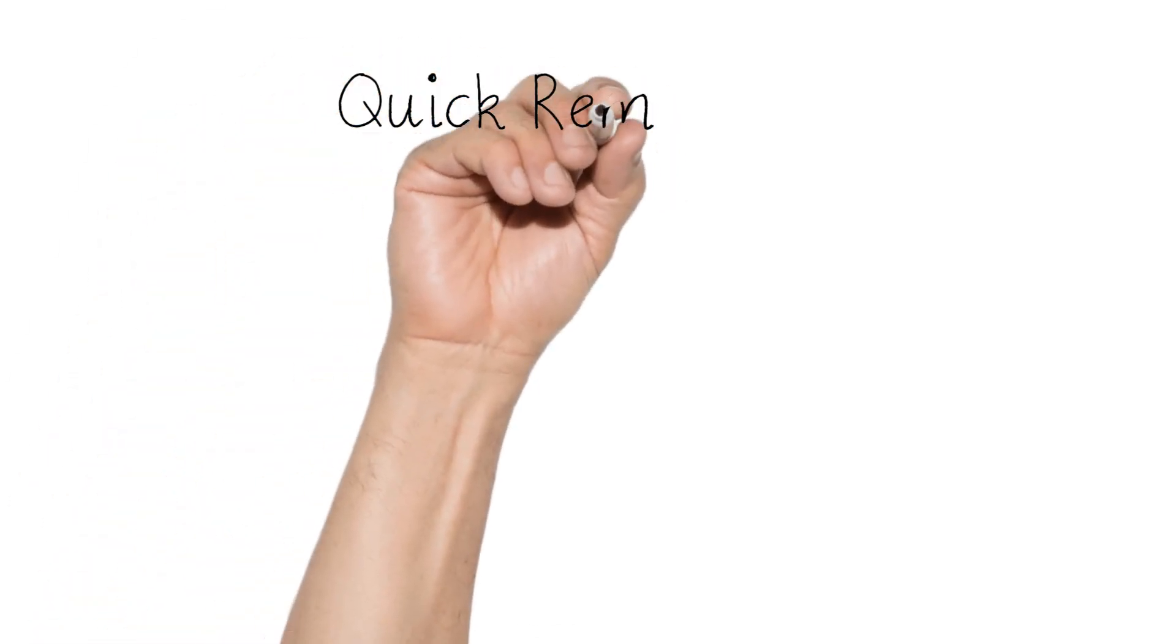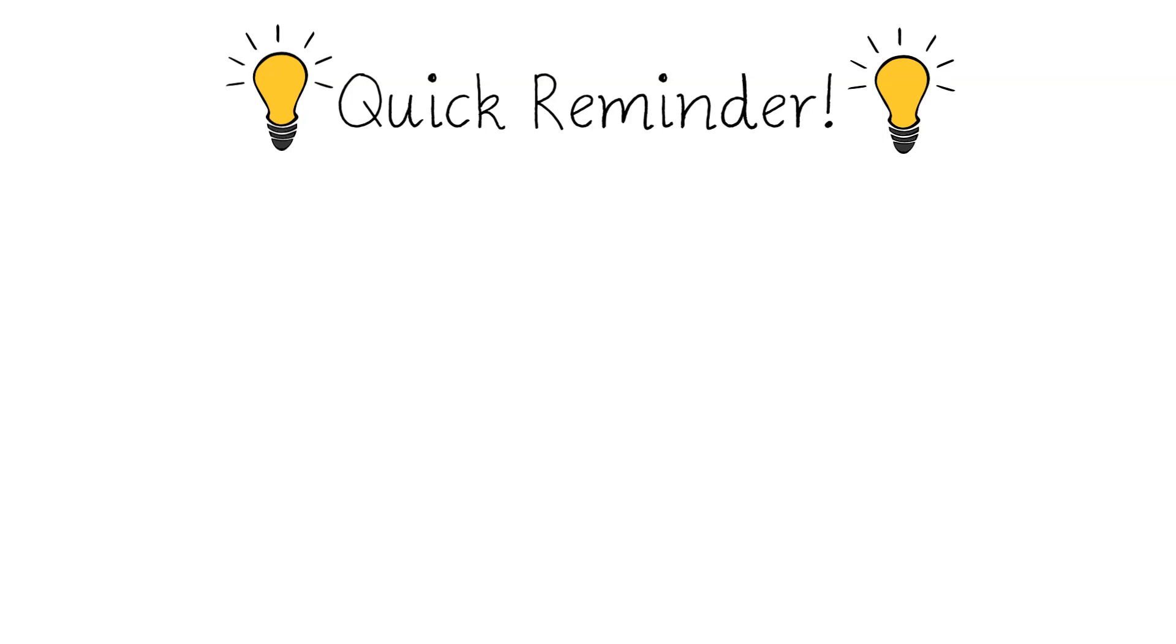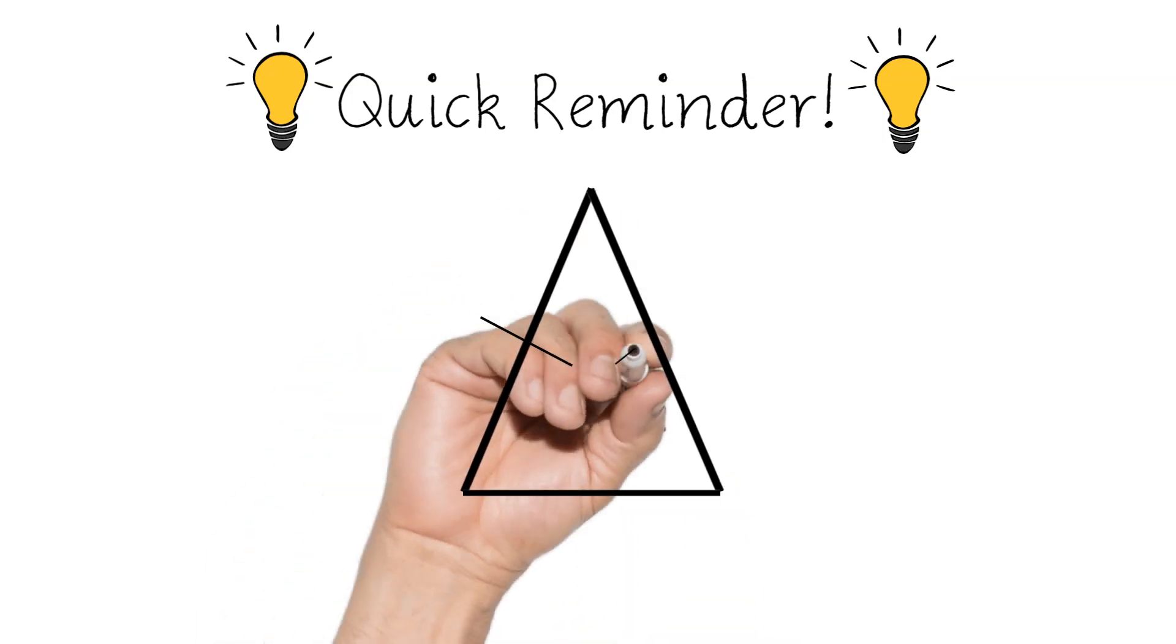So let's have a quick reminder because this particular triangle will come up in these sorts of questions when we're dealing with radii and chords. So those little arcs, those little lines, show that those two sides are the same. So this particular triangle is called an isosceles triangle.